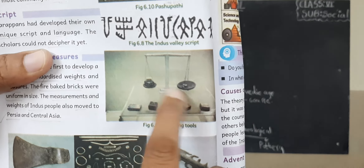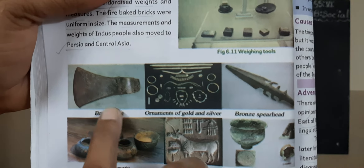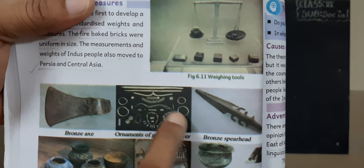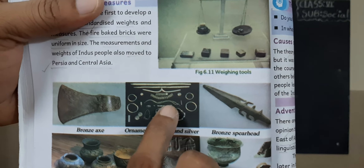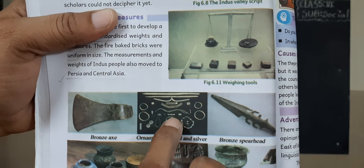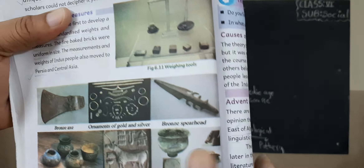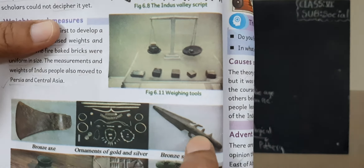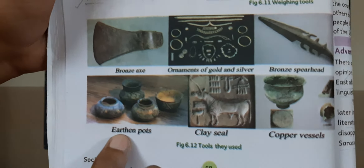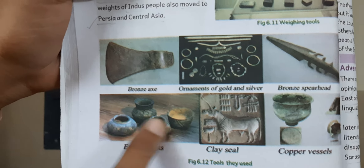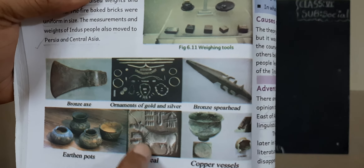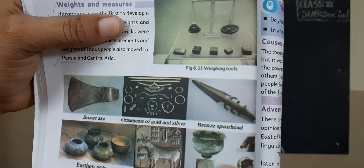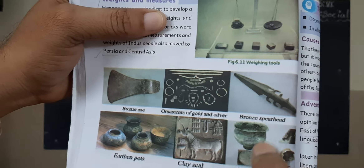Next, the weighing tools — look at these weighing tools. Next, look at the bronze axe, ornaments of gold and silver, bangles, earrings. Next, a bronze spearhead — this is a weapon. Earthen pots made of clay. A clay seal. Copper vessels — look at the copper vessels.